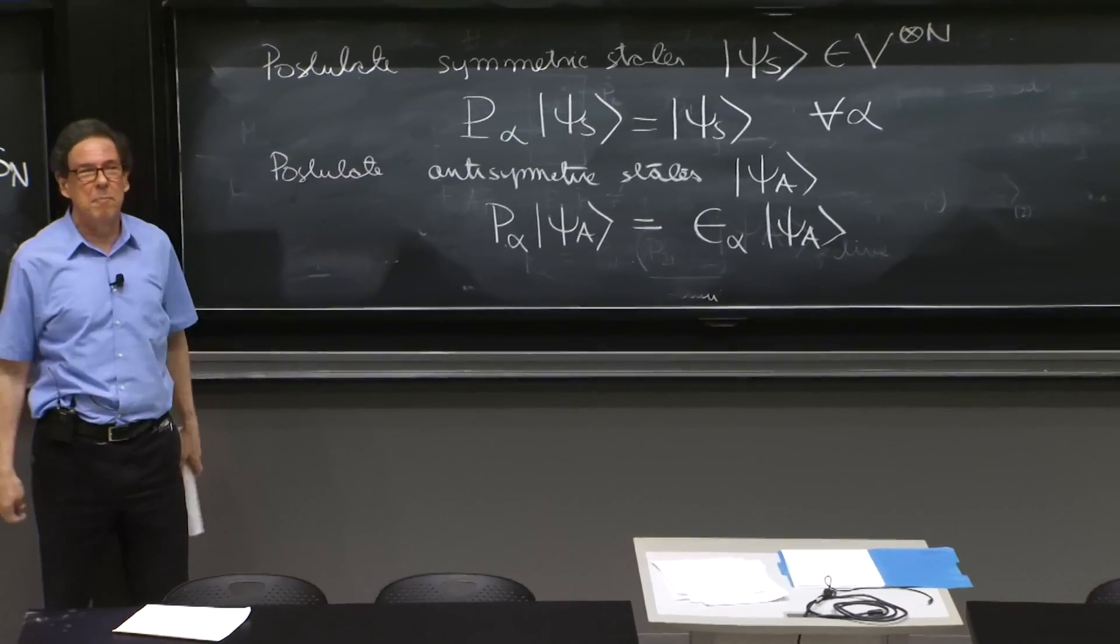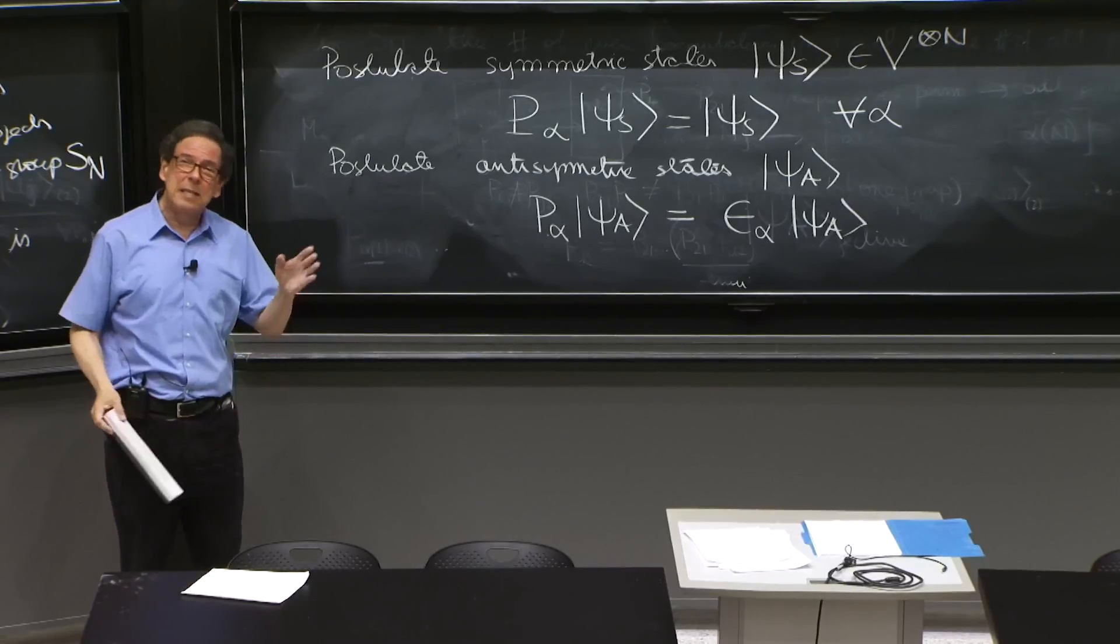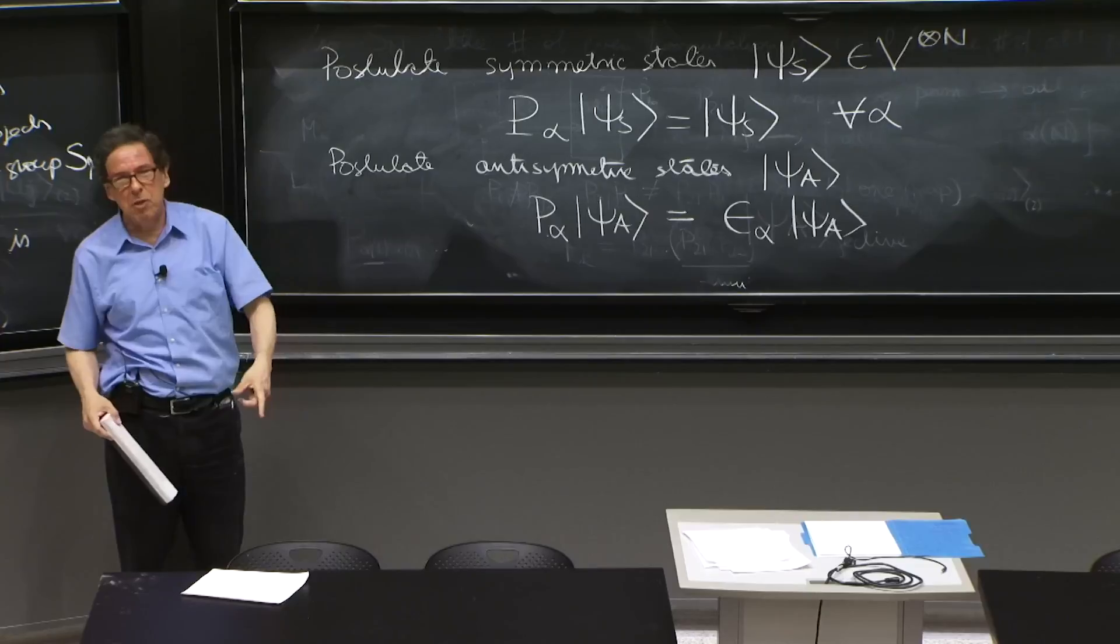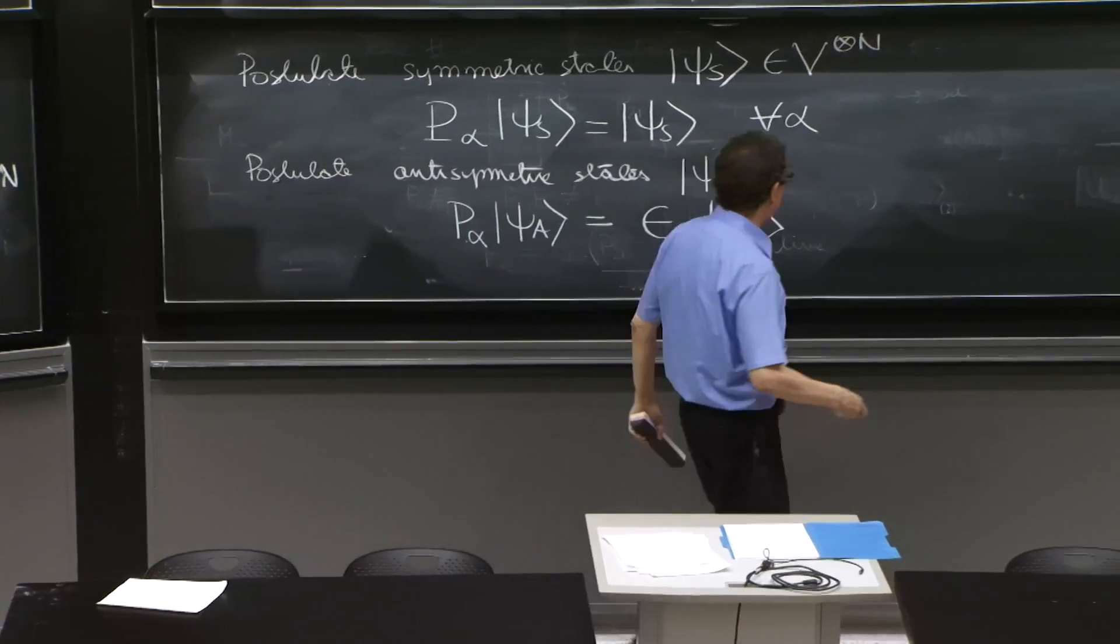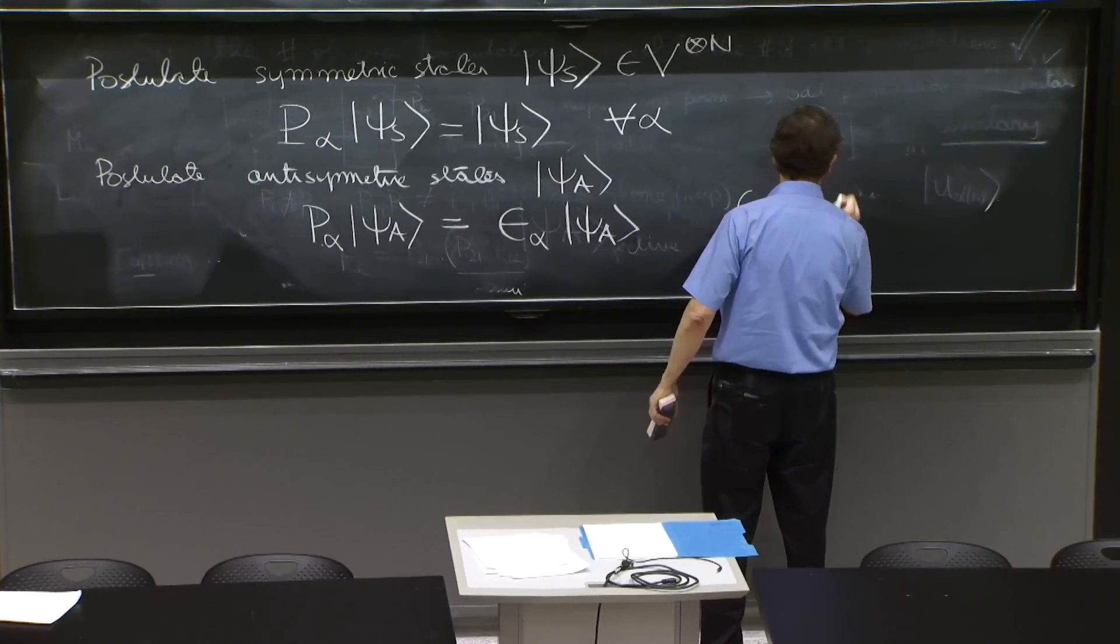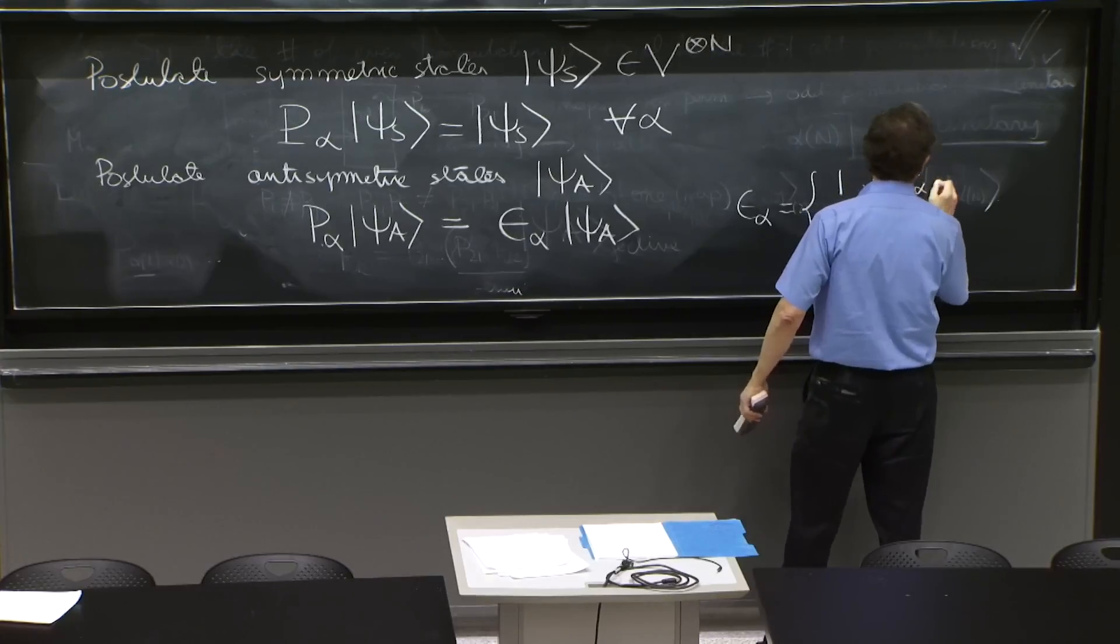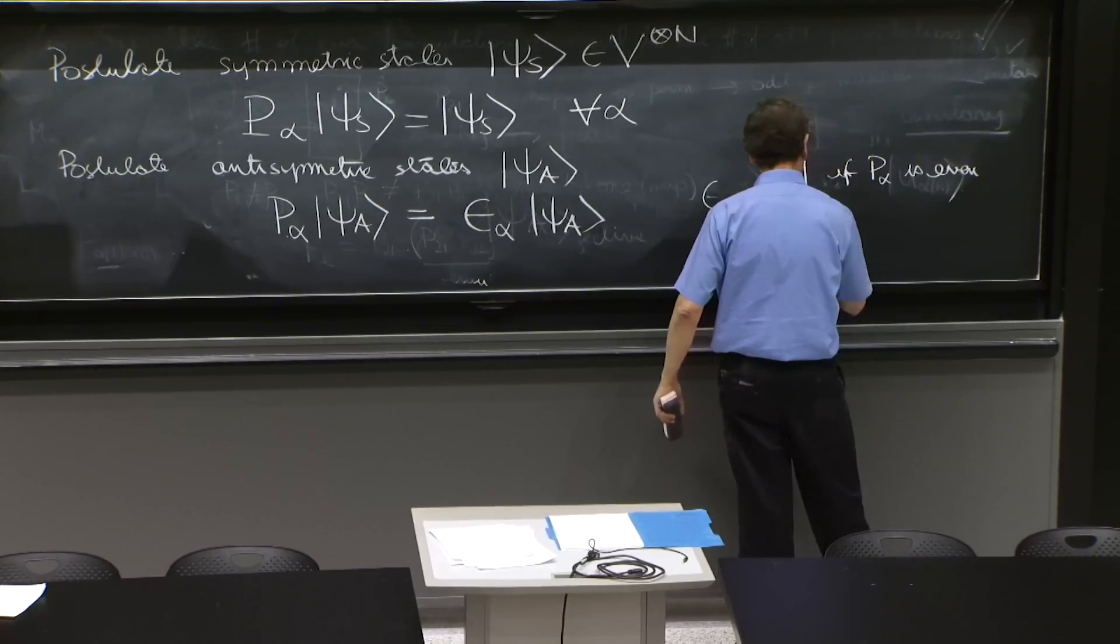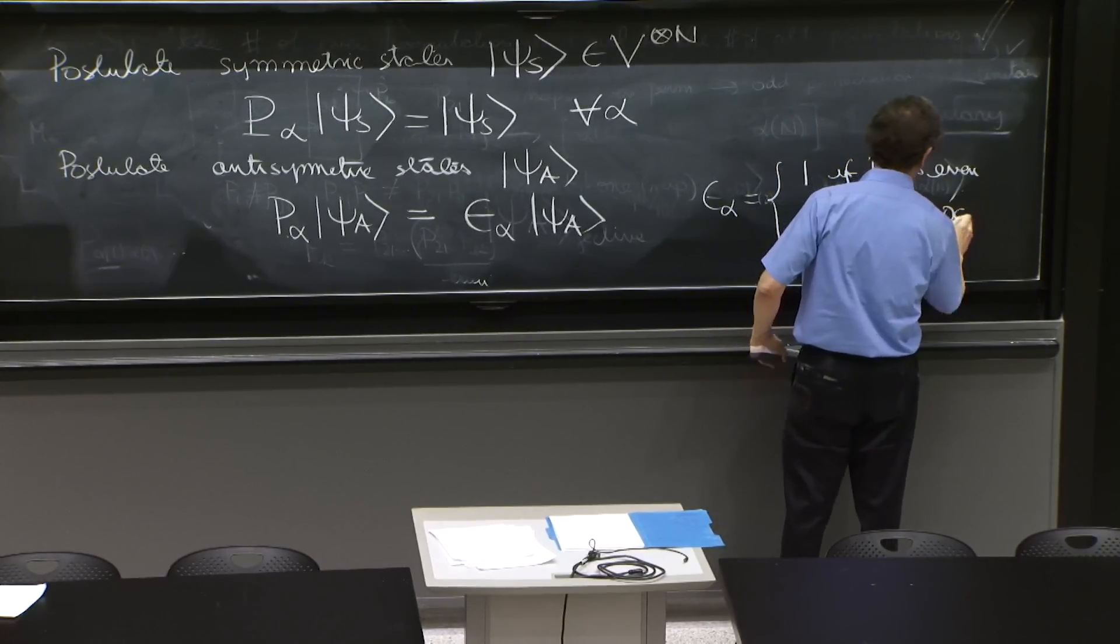Sometimes it's going to be a minus. Sometimes it's going to be a plus. For example, for the identity operator, it should be a plus. For a transposition, it should be a minus. So what is this epsilon_alpha? Epsilon_alpha is equal to 1 if P_alpha is an even permutation, or minus 1 if P_alpha is odd.